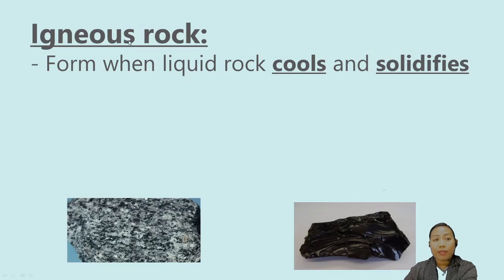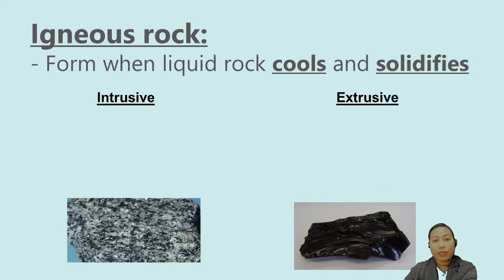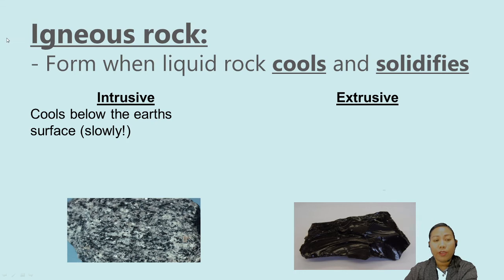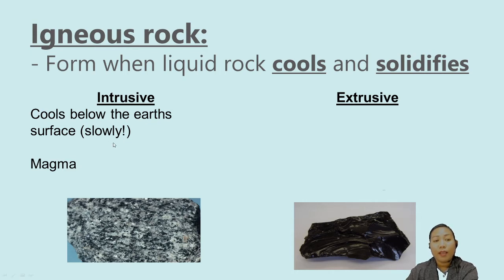Igneous rocks form when liquid rock cools and solidifies. There are two types of igneous rock: intrusive and extrusive. Intrusive rocks cool below the earth's surface very slowly, forming from the magma below the surface. Magma that cools underground is called a plutonic, or intrusive, igneous rock.